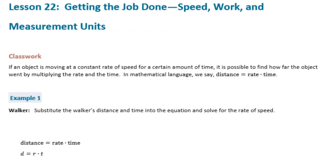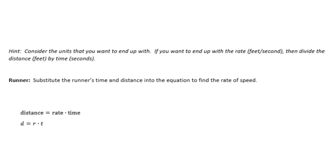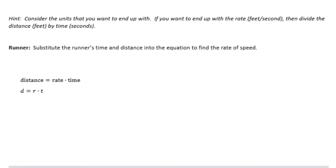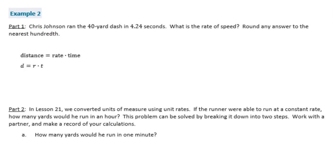Sixth grade Module 1, Lesson 22 classwork. Example 1 needed to be done in class because it involved measuring out a distance and timing someone, so those questions can only have been answered in class. I'll skip down to number two.